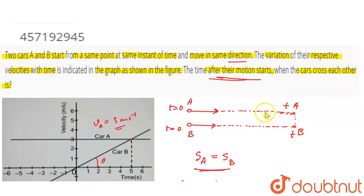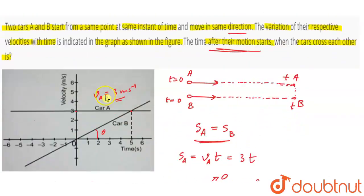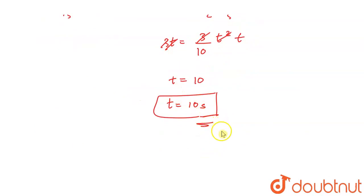So the time after the motion starts when car B will cross car A is 10 seconds. Thank you students.